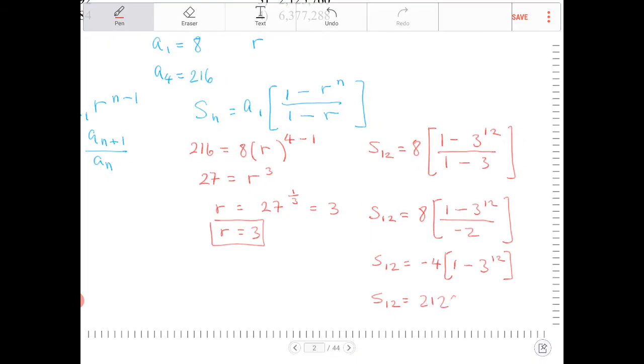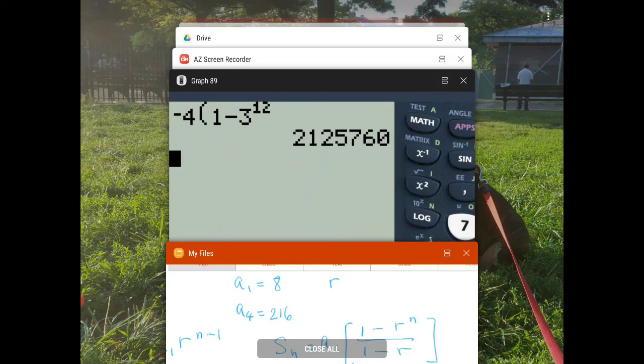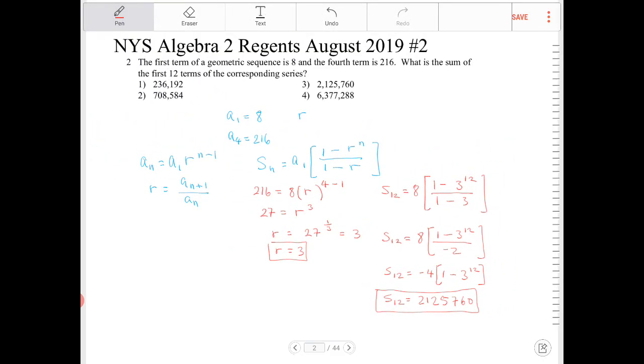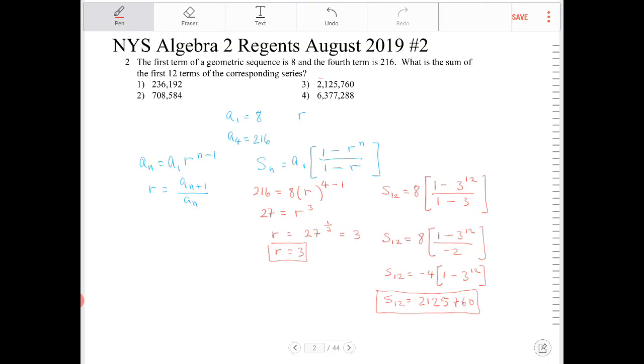So 2, 1, 2, 5, 2, 1, 2, 5, 7, 6, 0. And that would be option 3.